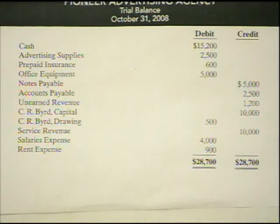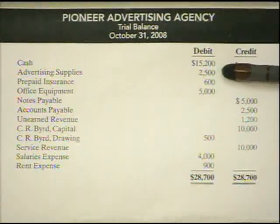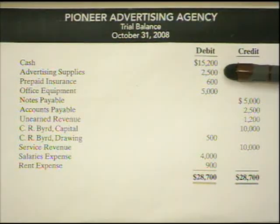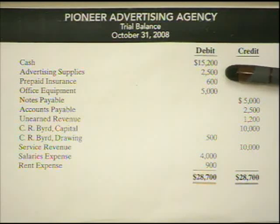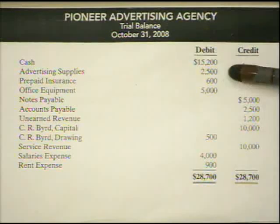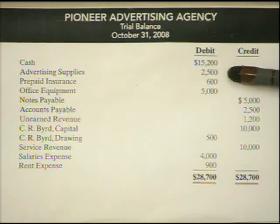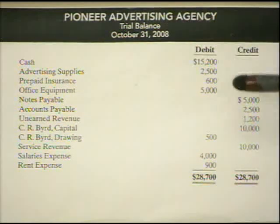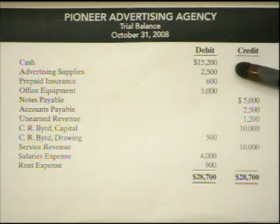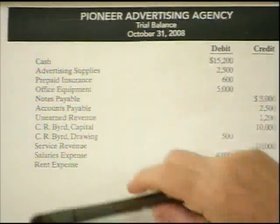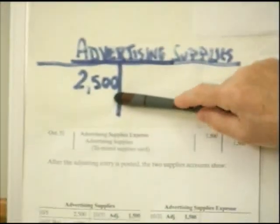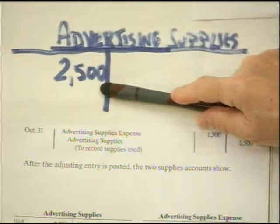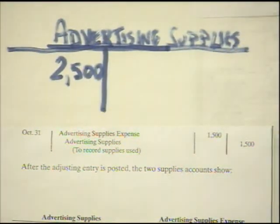The first item I want to talk about is the advertising supplies of $2,500. As we purchased our supplies, we would credit cash and debit advertising supplies, and let's say we put them in a closet in the back of our business. If we didn't use any and went back to count them, we'd have $2,500 worth of supplies. If we look at the general ledger T-account for advertising supplies, we'd see at the end of the month it has $2,500 worth of supplies in it.